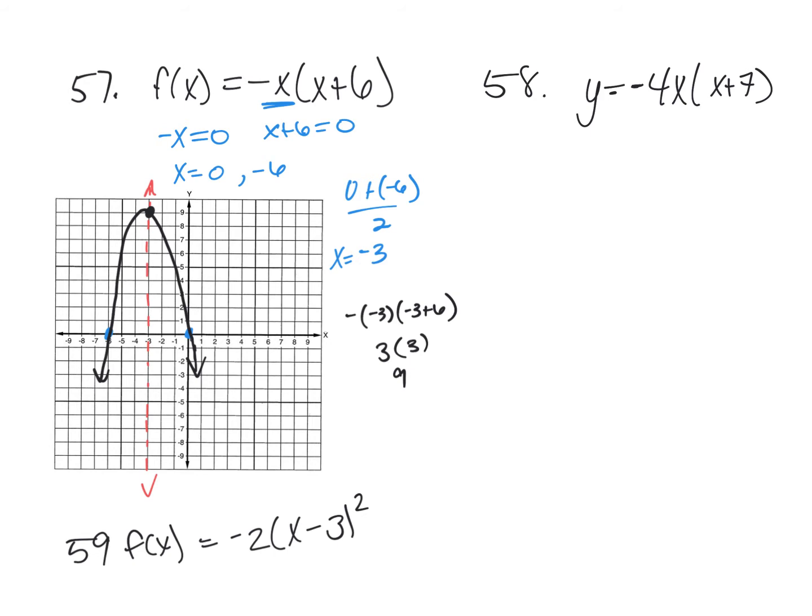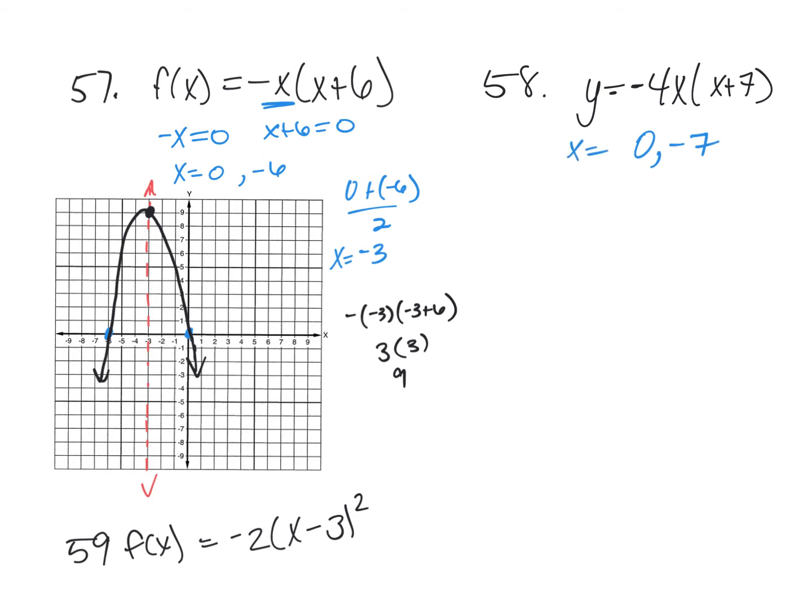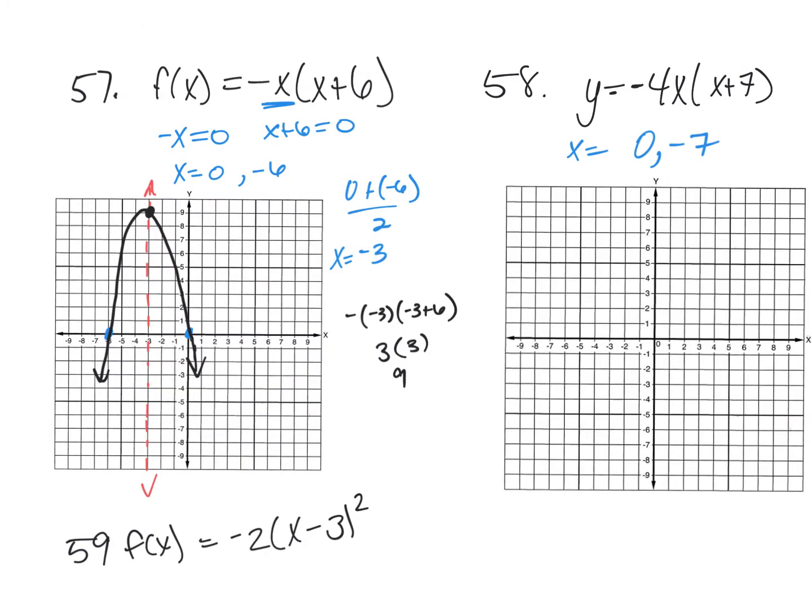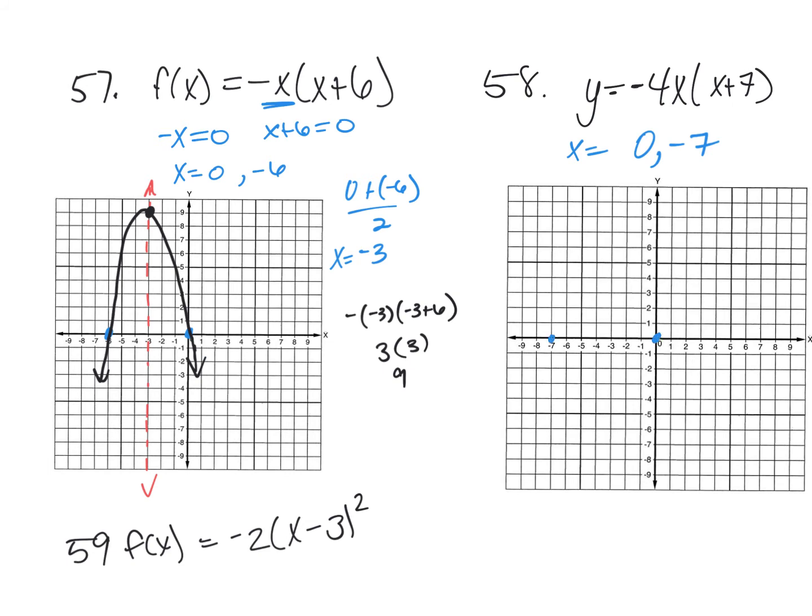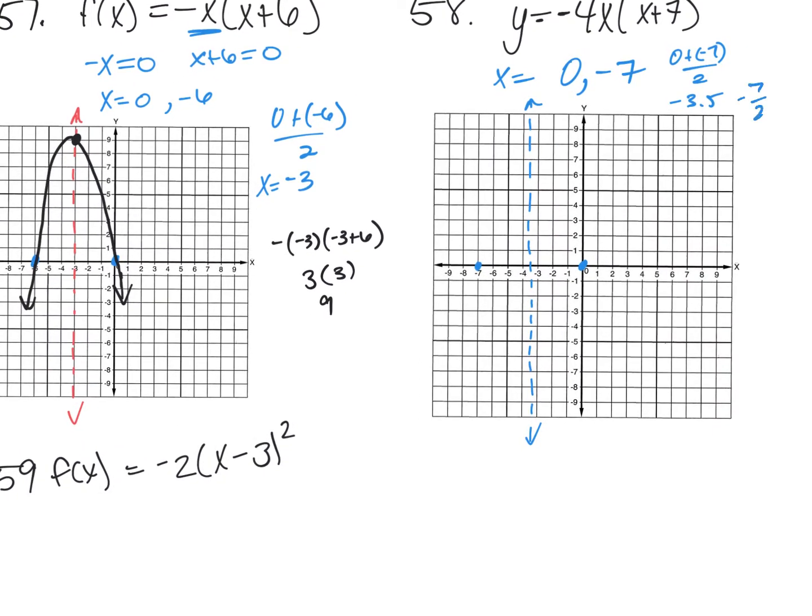So now what are my zeros? What are my zeros for y equals negative four x times x plus seven? Zero and negative seven. So my intercepts are at zero and negative seven and halfway is where? Negative three and a half. Because zero plus negative seven divided by two is negative three point five. So you can write it as negative seven halves or negative 3.5, whichever is easiest for you. But I got to plug it in.